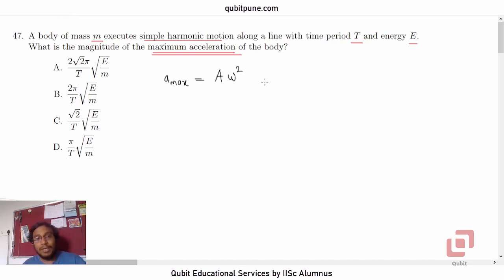Now, we also know that the total energy of a simple harmonic motion body, a body oscillating in SHM is half K A squared. What is K? K is the spring constant or spring stiffness.